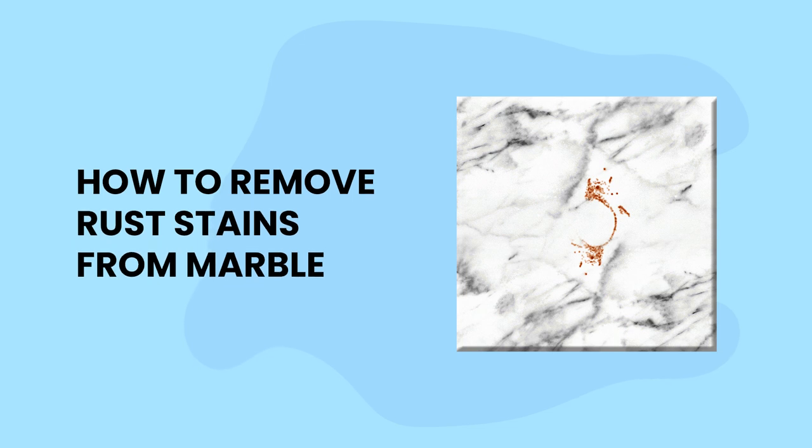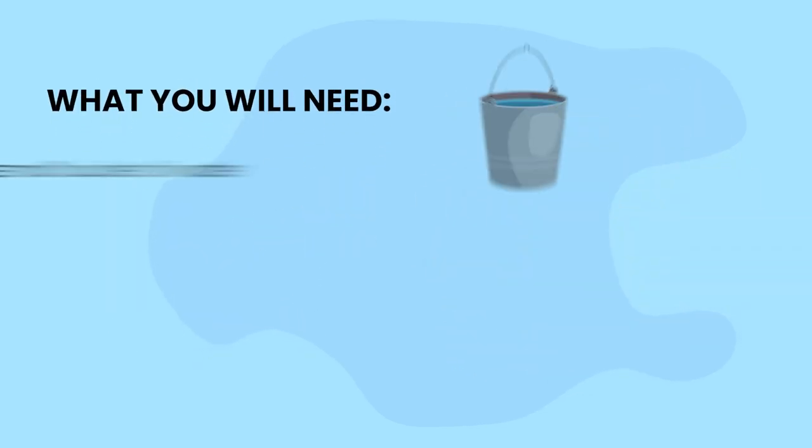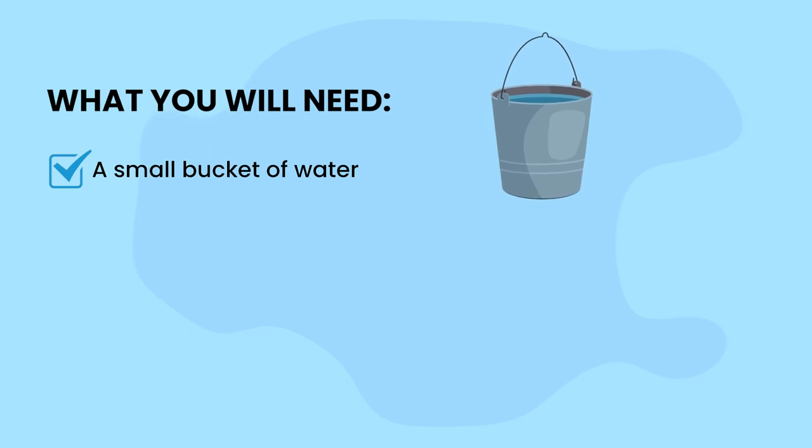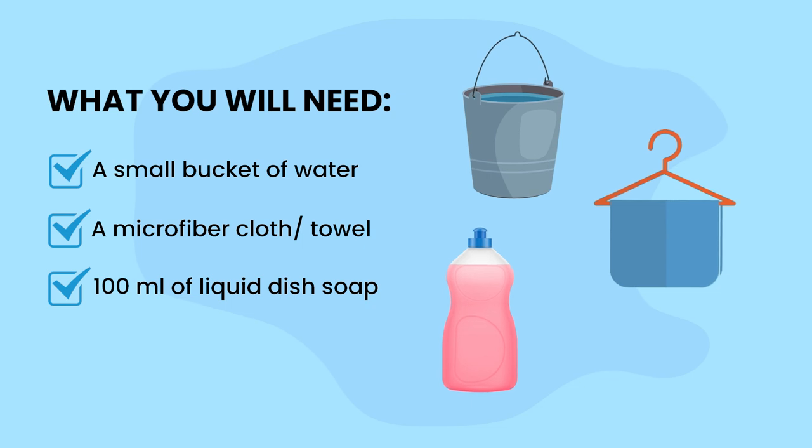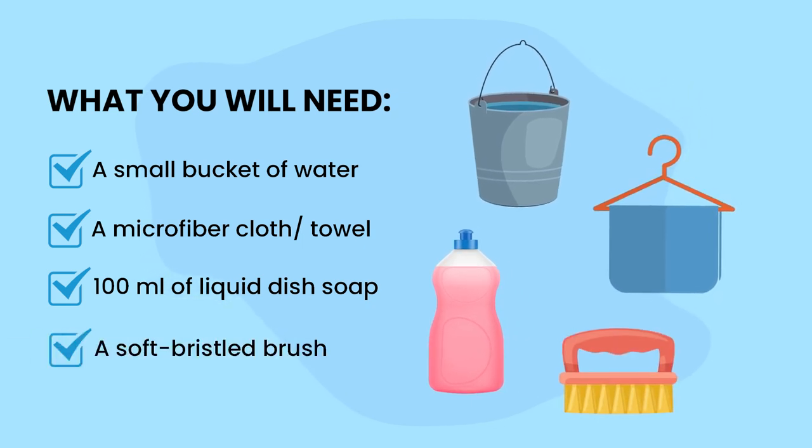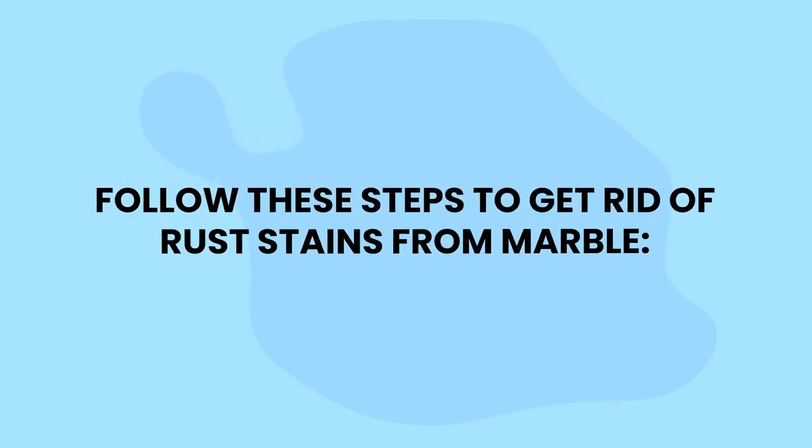How to remove rust stains from marble. What you will need: a small bucket of water, a microfiber cloth or towel, 100 milliliters of liquid dish soap, and a soft bristled brush. Follow these steps to get rid of rust stains from marble.